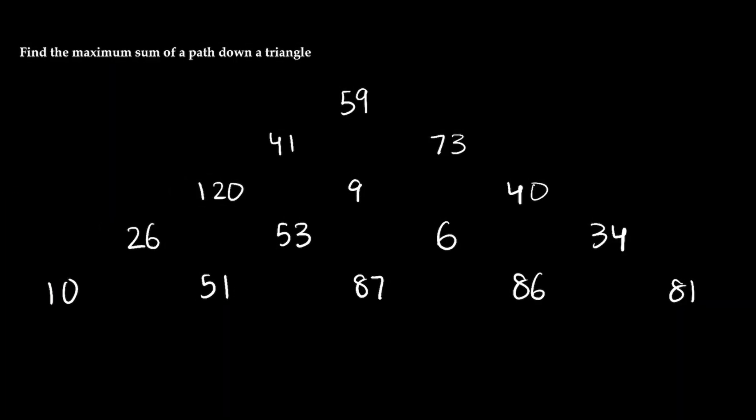Let's say I'm given a triangle with a whole bunch of numbers and I want to find the maximum sum of any path down a triangle. So a path might be defined as something where I might go from here to here and then maybe from here to here and here to here and here to here.